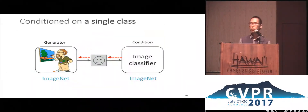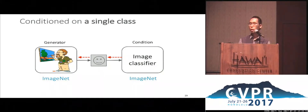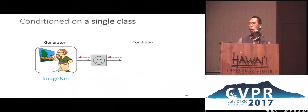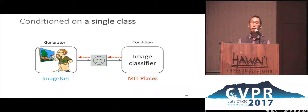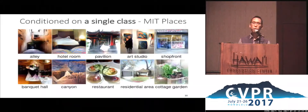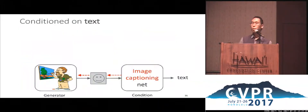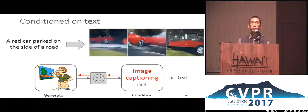In all previous results, both the generator and the classifier would train on the same dataset of ImageNet. Now, with PPGN, we can interestingly swap in a pre-trained classifier for MIT Places and start producing images for categories of places that the generator has never seen before. Similarly, we can also swap in an image captioning network and turn the system into a text-to-image system, allowing users to describe the image they want to synthesize.